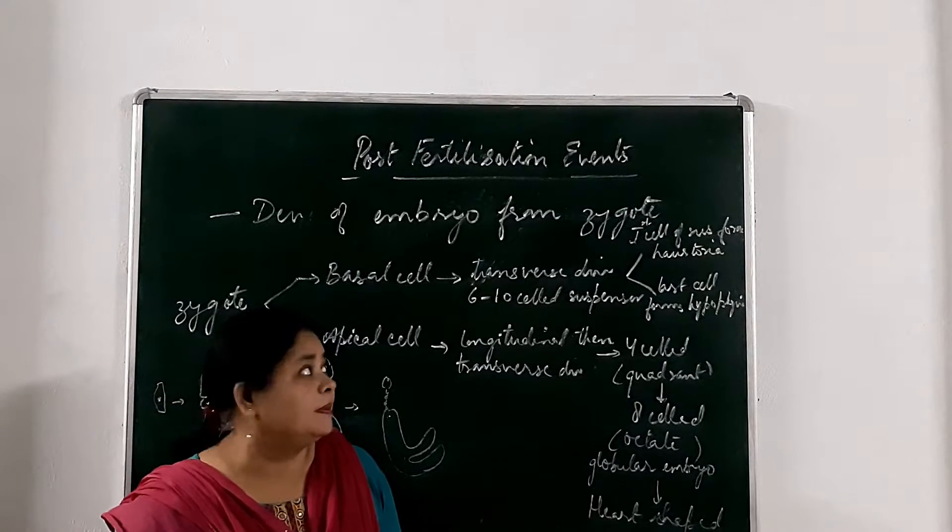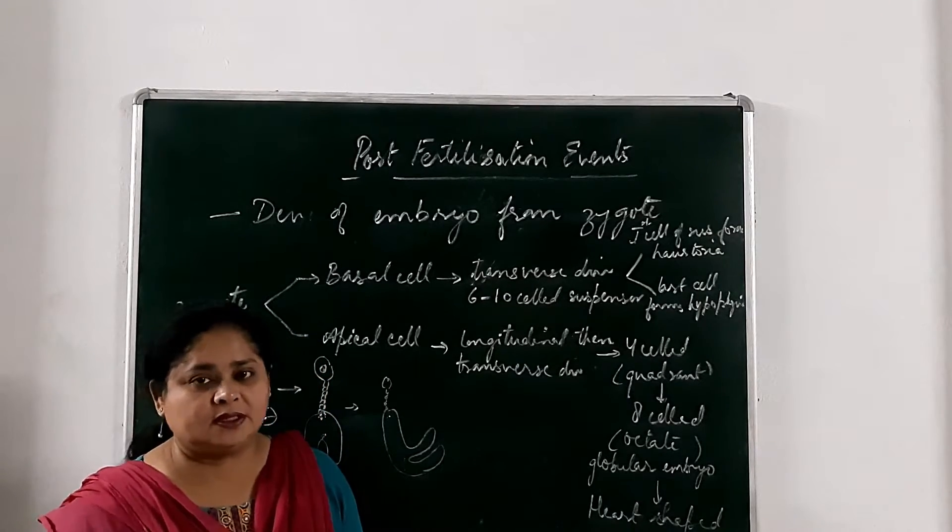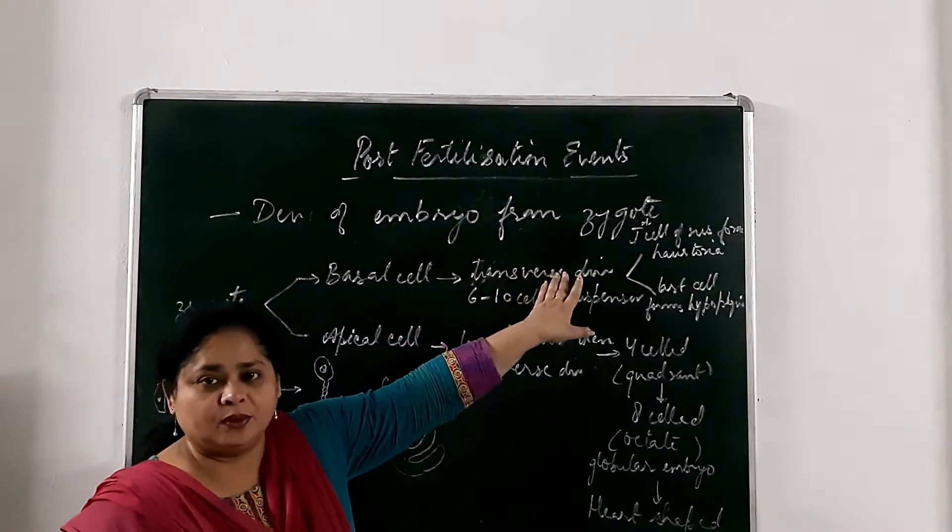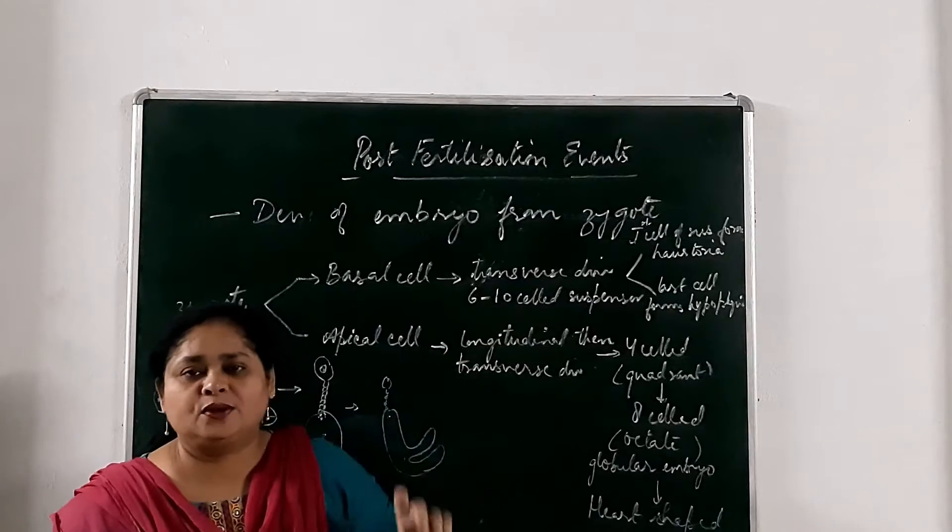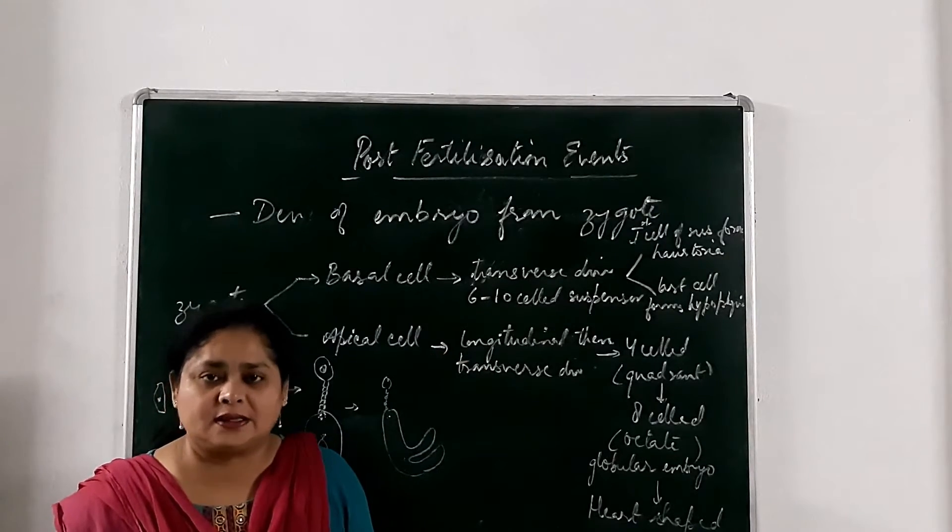Okay, now we will see the second step of post-fertilization event. This is the development of embryo from the zygote. When endosperm is formed, then the division in zygote starts.